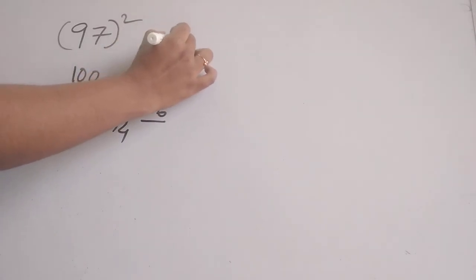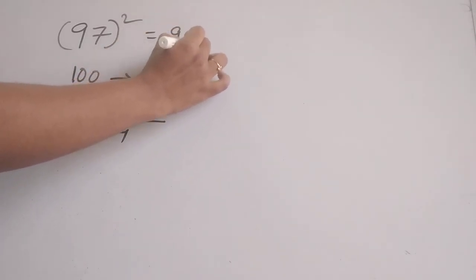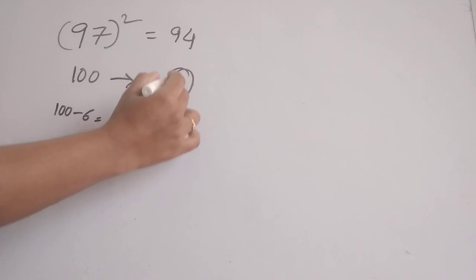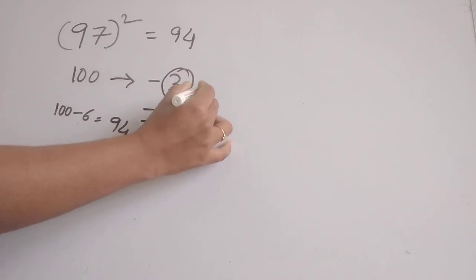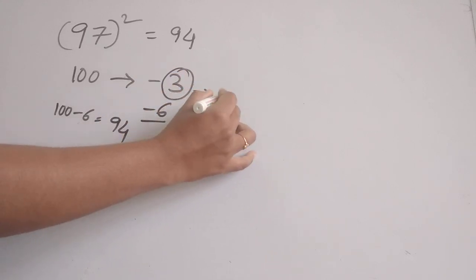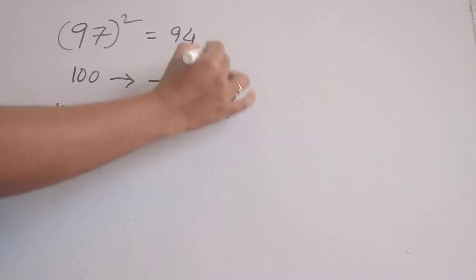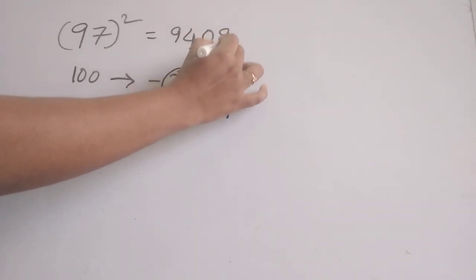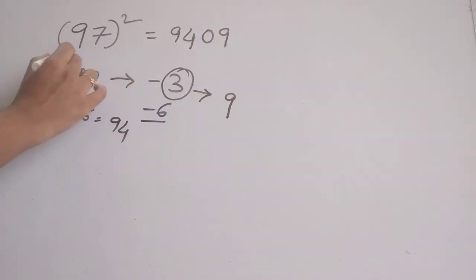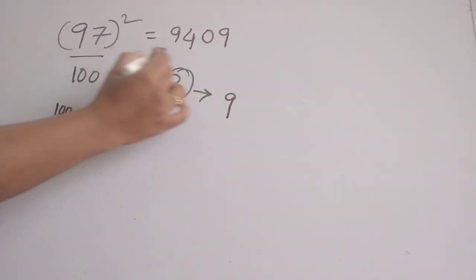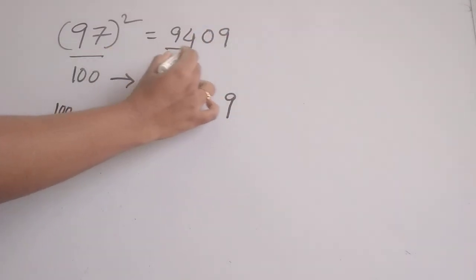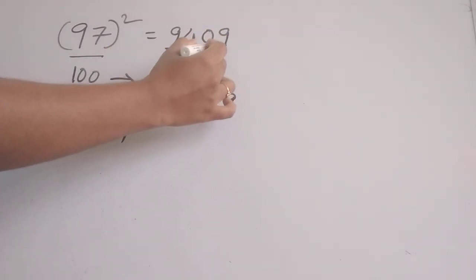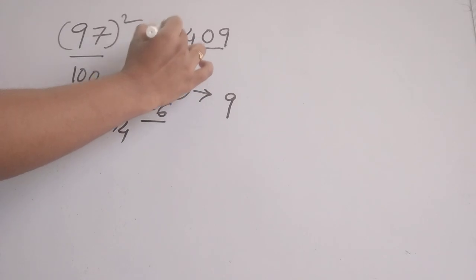We write 94 here. The square of the difference 3 is 9, so we write 09 here. The square of 97 is 9409.